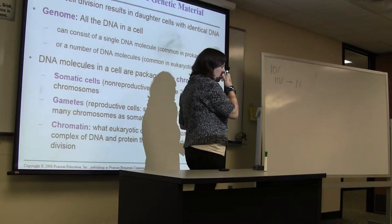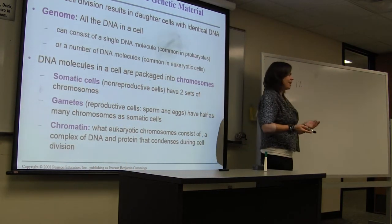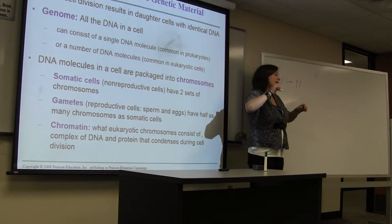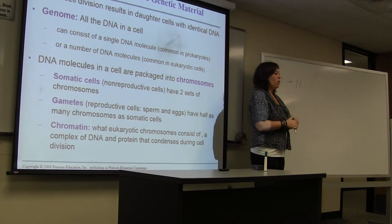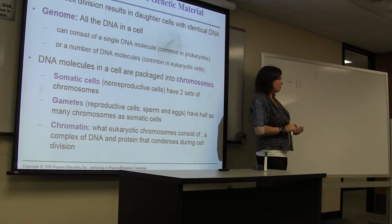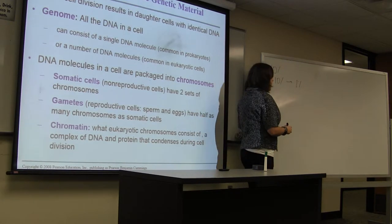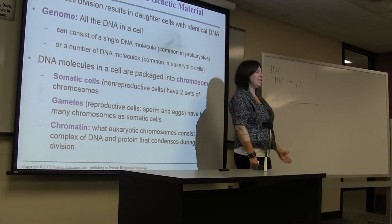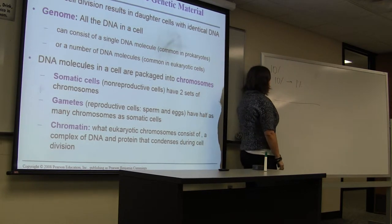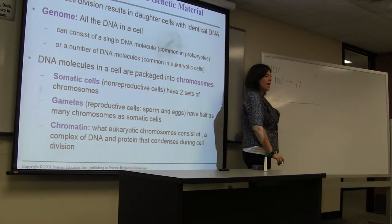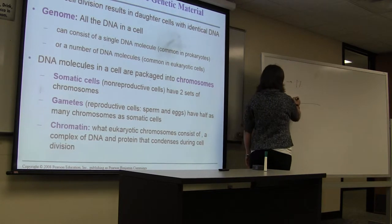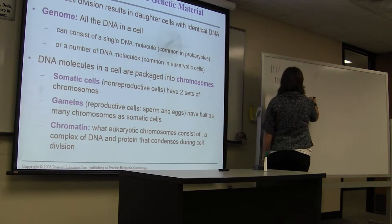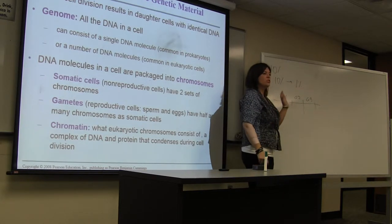First, we need to go over some terminology associated with DNA. There are different types of DNA based on what stage of the cell cycle it's in. Our eukaryotic DNA is going to be linear, and along this DNA you're going to have multiple different genes — gene 1, gene 2, gene 3, and so forth. All of these genes are arranged on chromosomes.